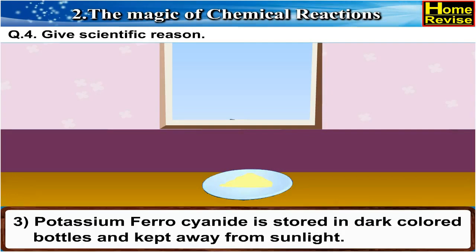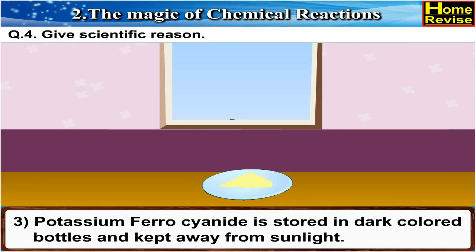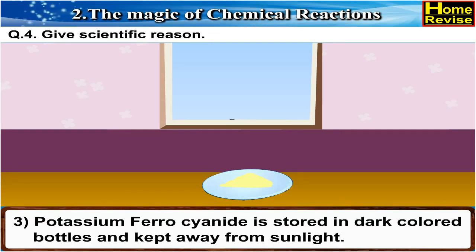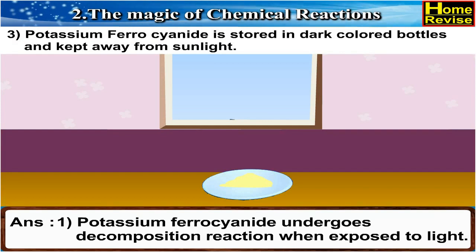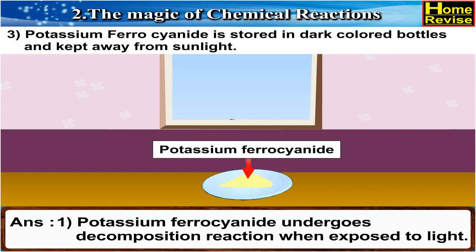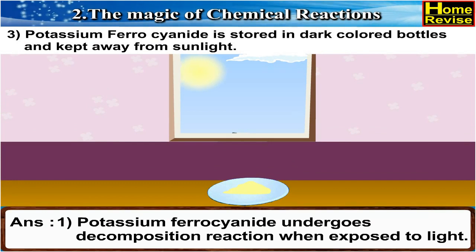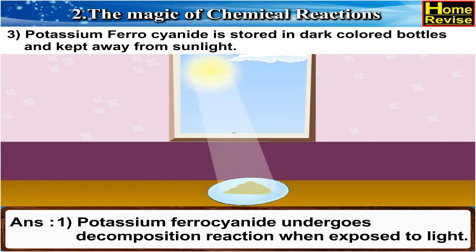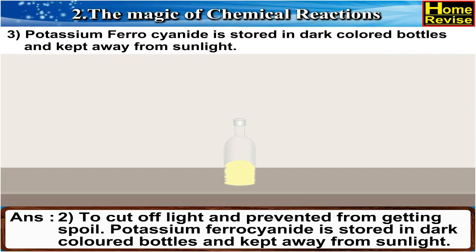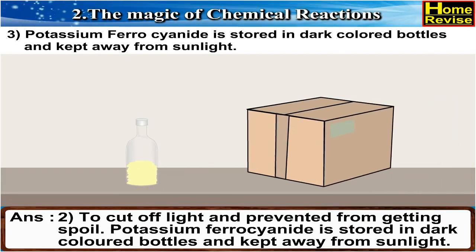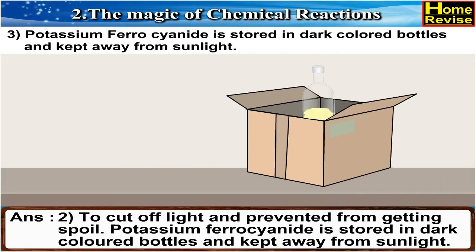3. Potassium ferrocyanide is stored in dark-colored bottles and kept away from sunlight. Answer: Potassium ferrocyanide undergoes decomposition reaction when exposed to light. To cut off light and prevent it from getting spoilt, potassium ferrocyanide is stored in dark-colored bottles and kept away from sunlight.